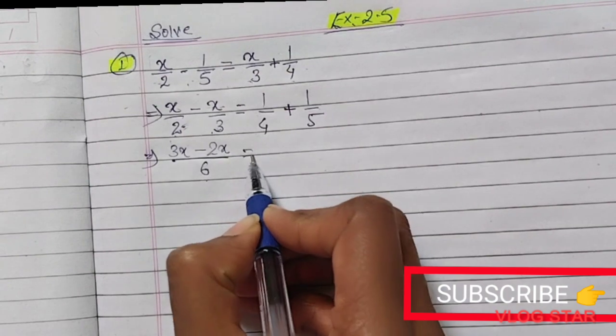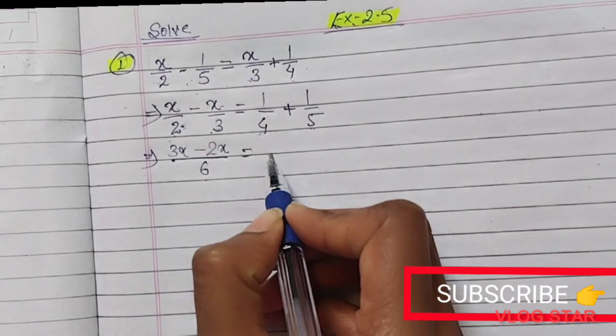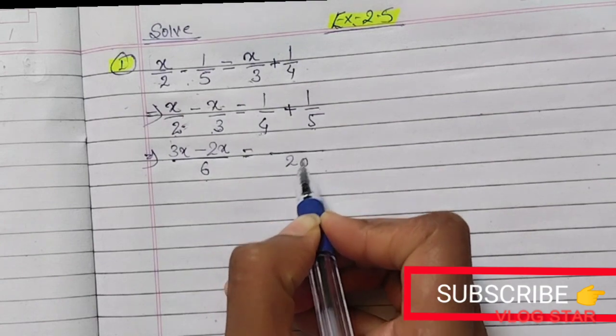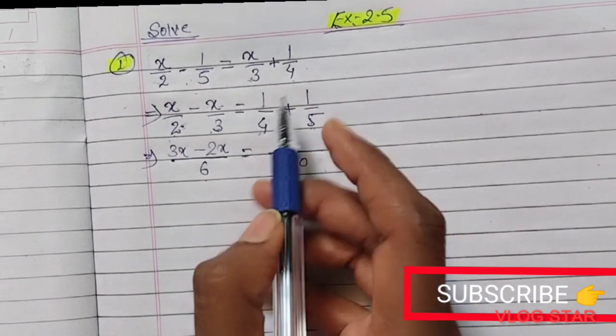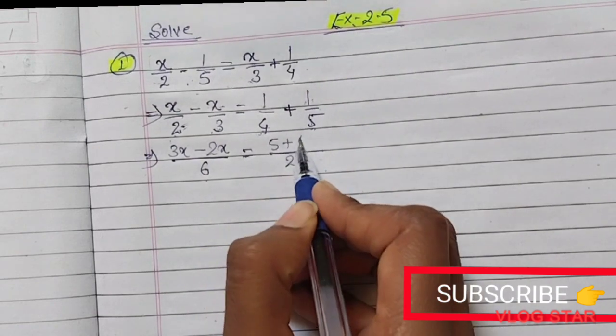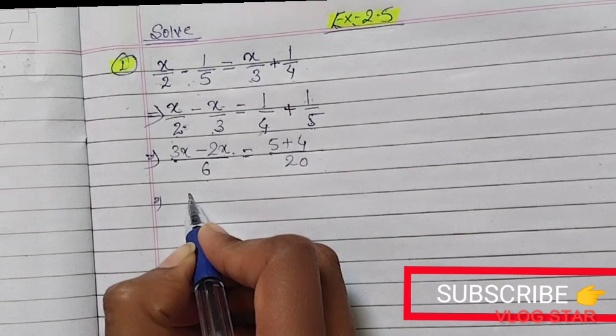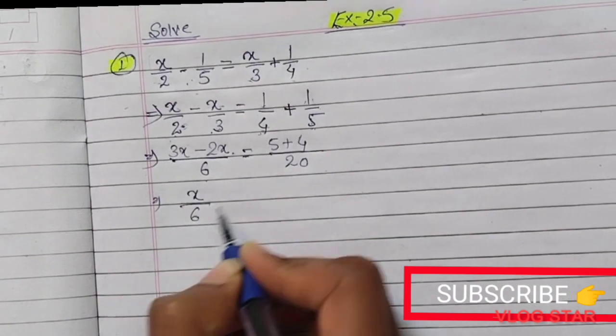The LCM of 5 and 4 is 20. Cross multiply: 5 times 1 is 5 plus 4 times 1 is 4. So 3 minus 2 is 1x divided by 6, which equals 5 plus 4, which is 9/20.